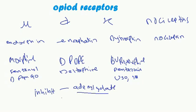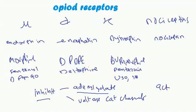All of these receptors inhibit voltage-gated calcium channels. And all of these receptors activate the potassium channels, promoting potassium inward flow.